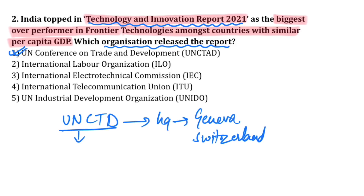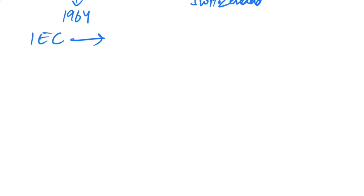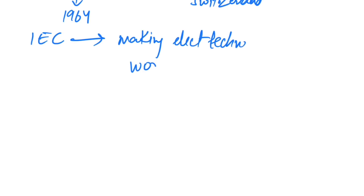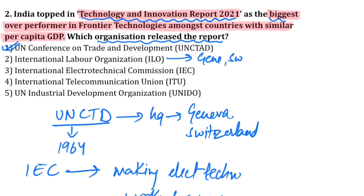UNCTAD was started in 1964. The International Labour Organization's headquarter is also in Geneva, Switzerland. The motto of the International Electro-Technical Commission (IEC) is 'Making electro-technology work for you.' You should know that India is the biggest overperformer in frontier technologies among countries with similar per capita GDP.